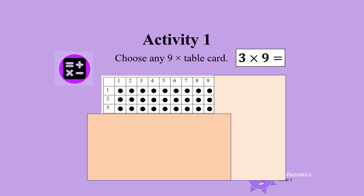You should have counted 3 times 9 is 27. Now use the answer card to check the answer. Choose another multiplication card and do this again.